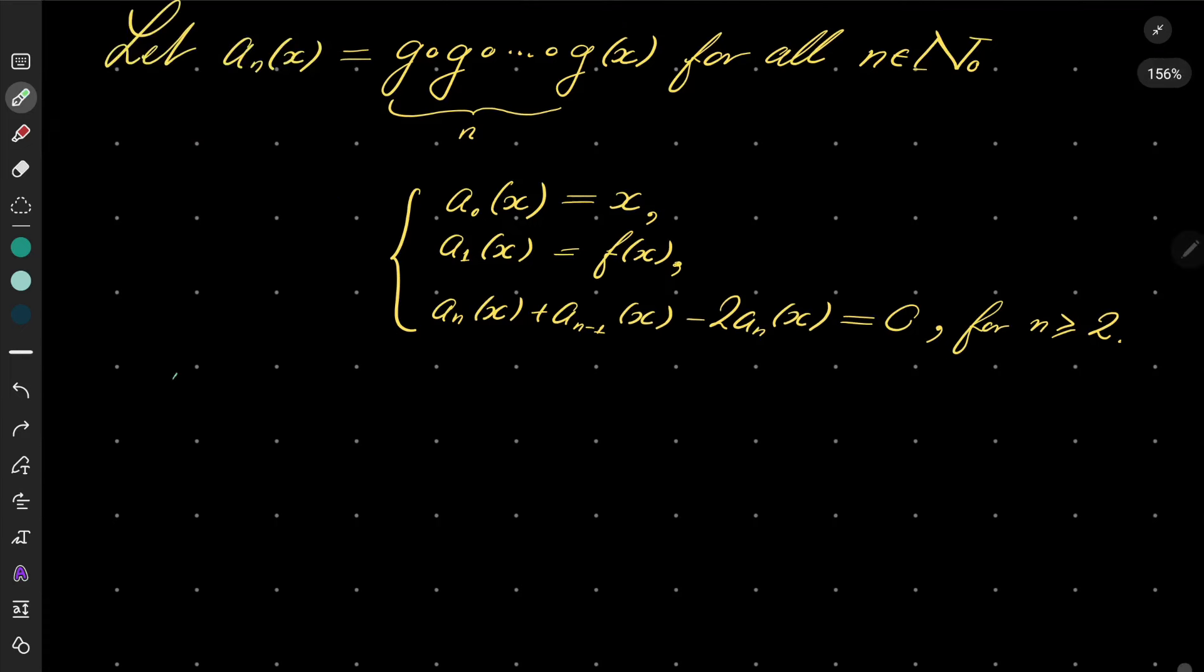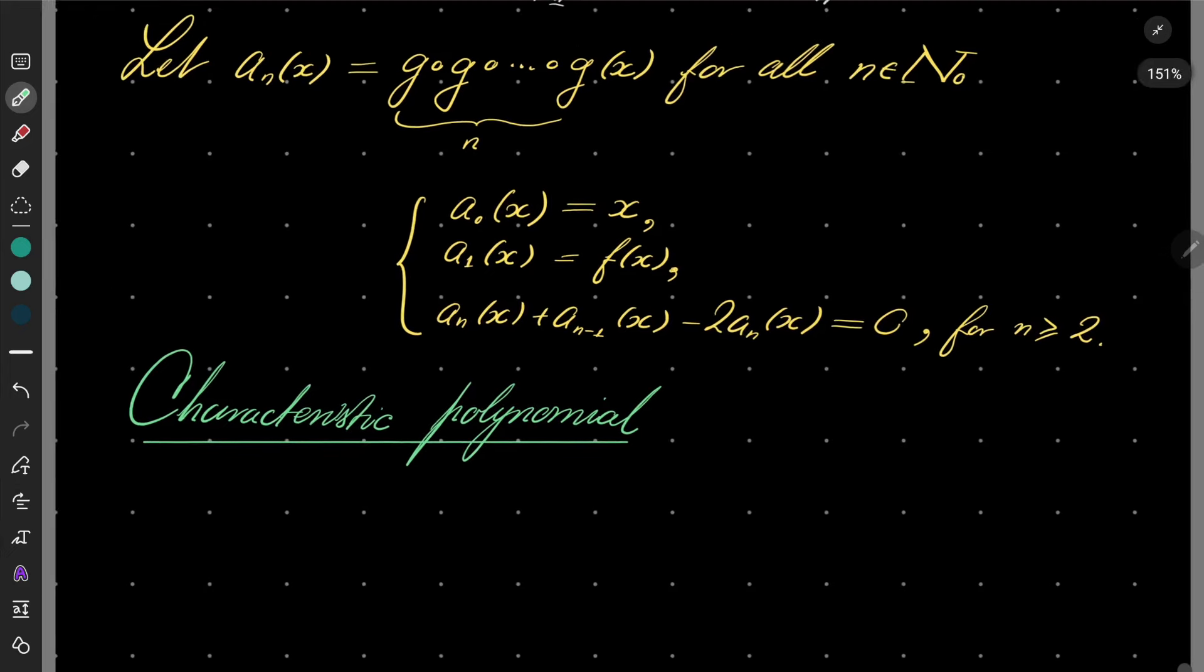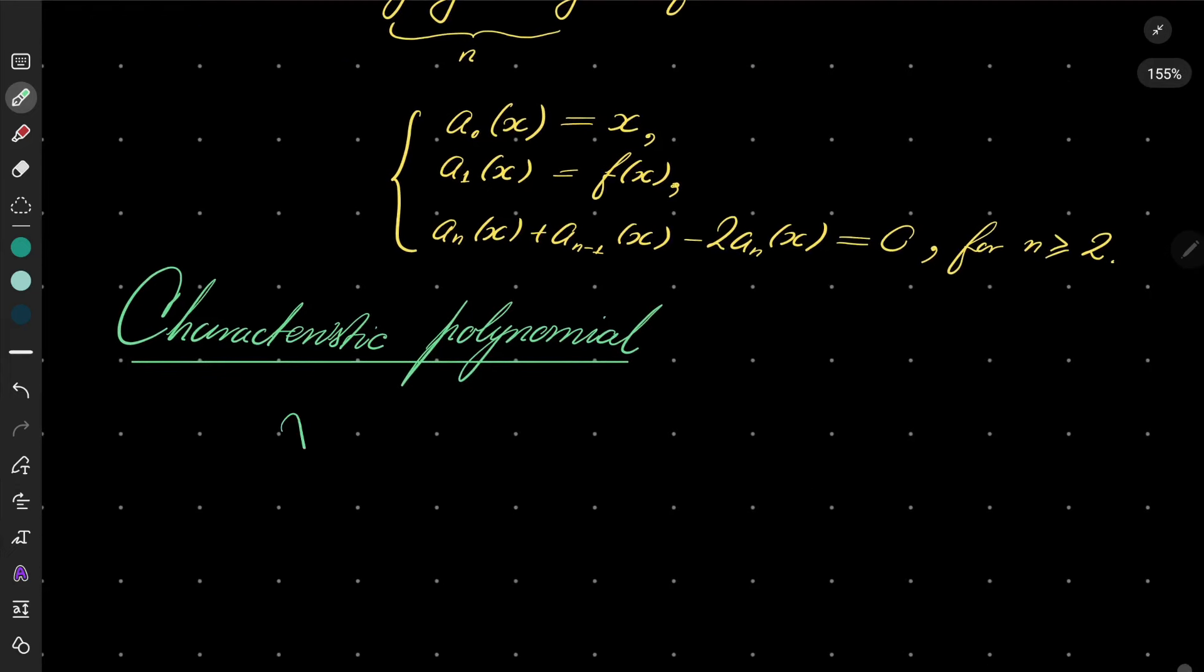The characteristic polynomial of this recursion can be computed in the following way: I will use Greek letter chi for characteristic.